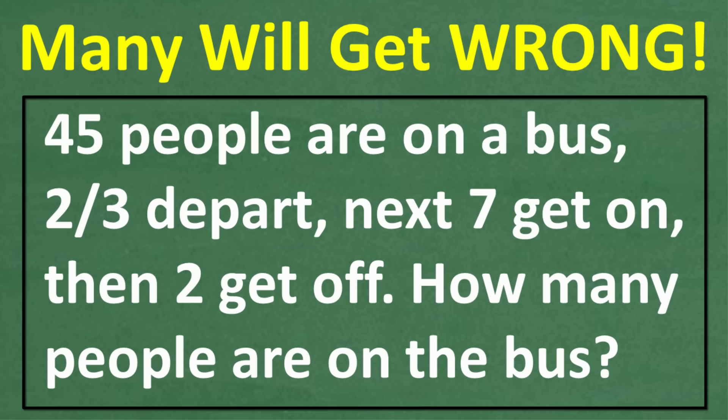45 people are on a bus. Two-thirds of them depart. Next, seven get on, then two get off. How many people are still on the bus after all that activity?